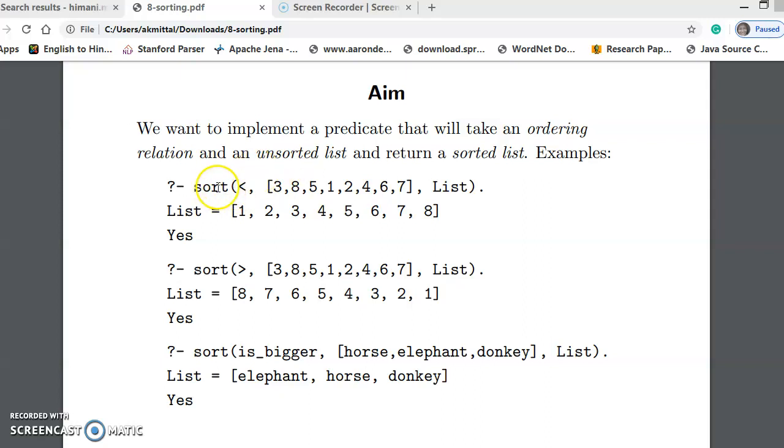So, what is our aim? We want to define a function sort in which we will specify the relationship, either less than or greater than, and we will give the list. If we give less than, then the list is returned in ascending order. If we give greater than, then the list is returned in descending order. This is the purpose of this particular program.